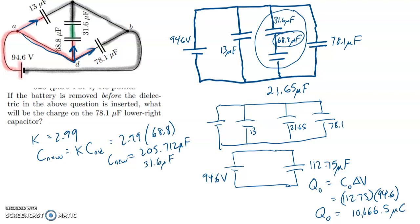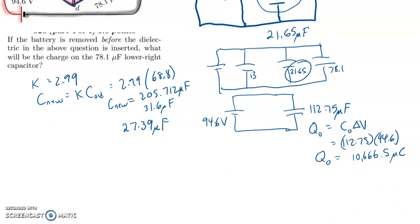So that is in series with the 31.6. So now I have to use the series formula to figure out the new equivalent capacitance there. So that's, I'm going to do 1 over 205.712. I'm going to do 1 over 31.6. I'm going to add those together and take the reciprocal of that. And so I get 27.39 microfarads. So notice that before it was 21.65. Now it's 27.39.